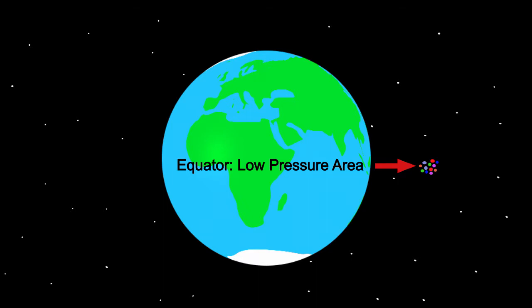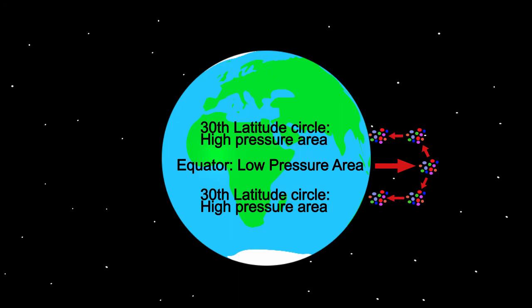The gases which have risen can only rise to a height of approximately 6 miles or 10 kilometers. They then spread north and southward. About 2,500 kilometers or 1,500 miles north and south, they sink again to the surface of the earth around the 30th latitude circle. Because a lot of air sinks to the earth here, there are many gases at the surface and air pressure is much higher — this is called a high pressure area. At the surface, the gases flow from the high pressure area back to the low pressure area. This air flow is called a Hadley cell.